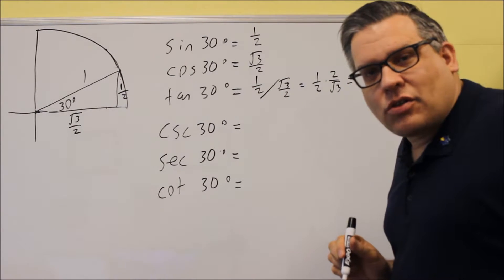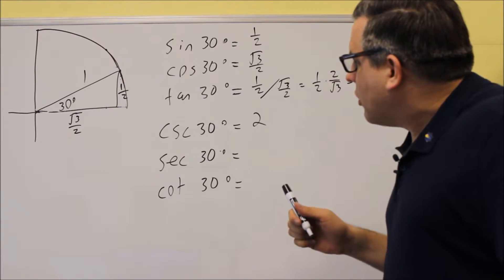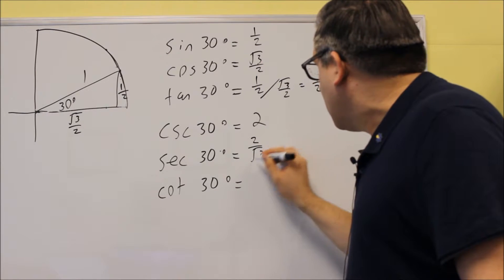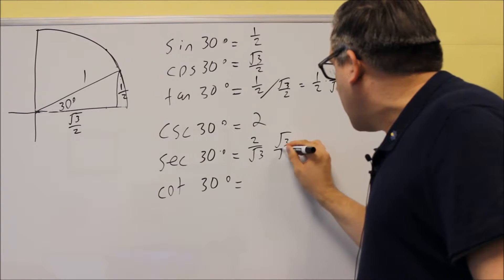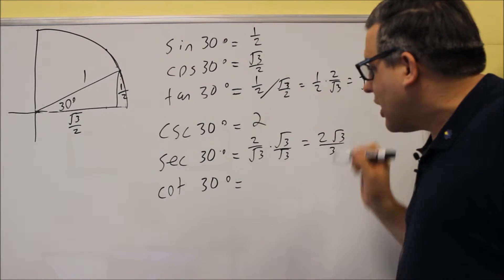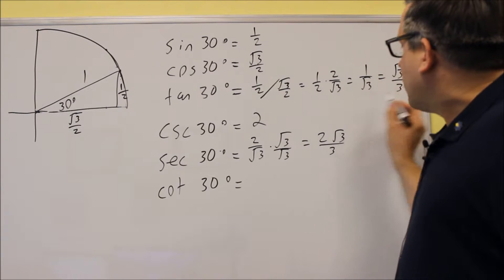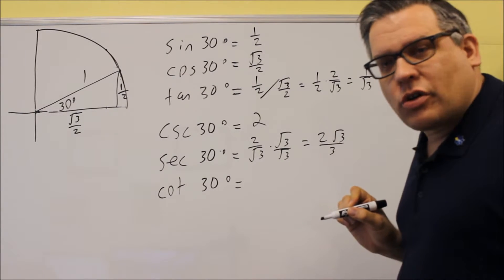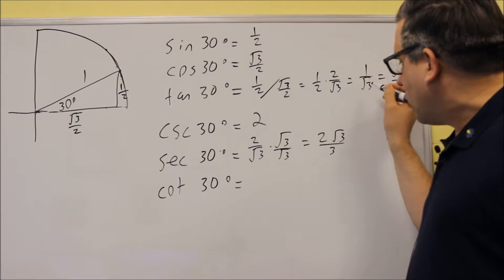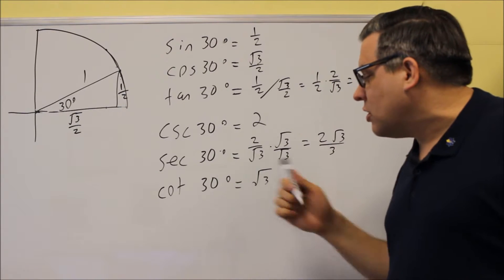Cosecant 30 is the reciprocal of 1 half, which is just 2. Secant 30 is the reciprocal of square root of 3 over 2, giving 2 over root 3, which after rationalizing becomes 2 root 3 over 3. Cotangent 30 is the reciprocal of tangent 30. Rather than flipping square root of 3 over 3, it's easier to use the un-rationalized form 1 over root 3, flip it to get root 3, so cotangent 30 equals root 3.